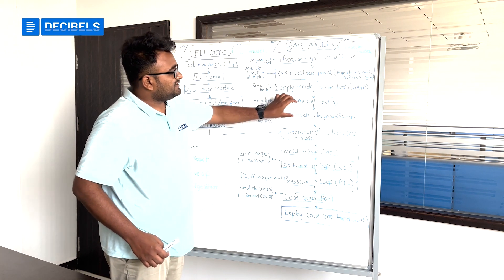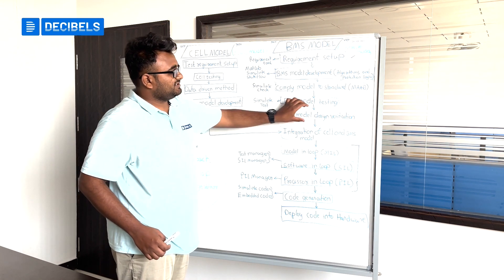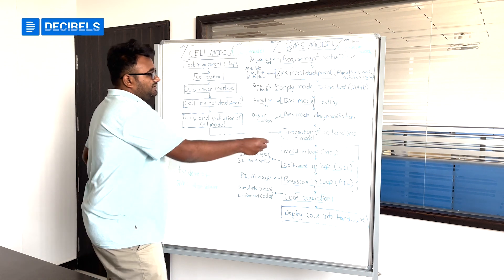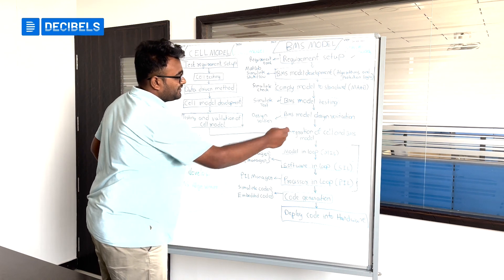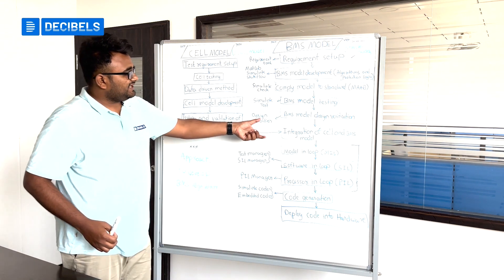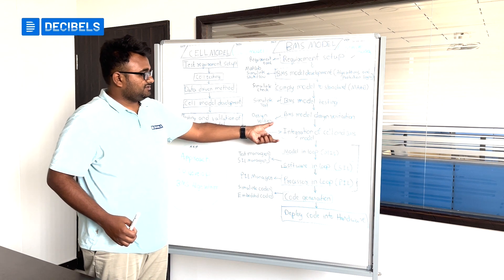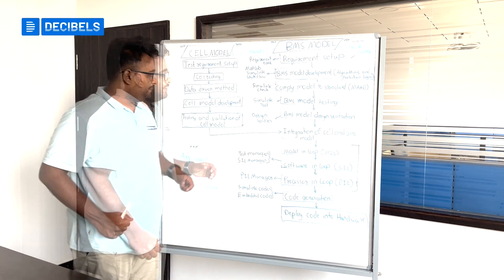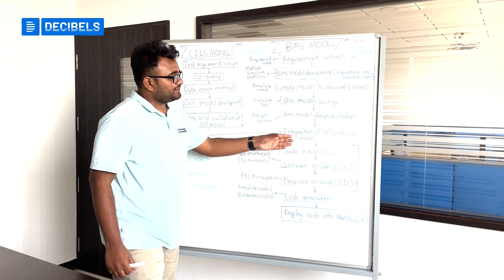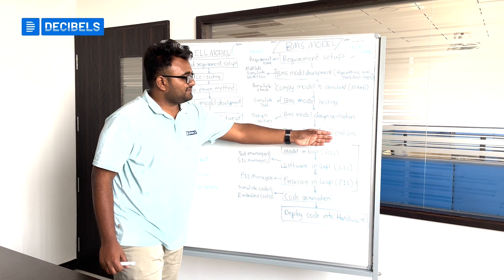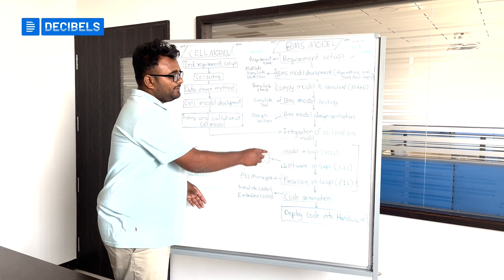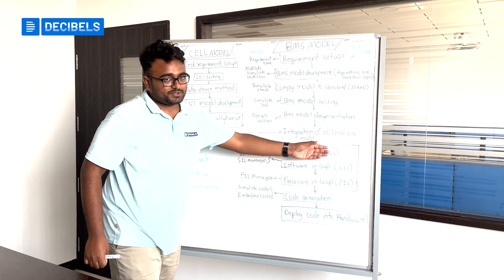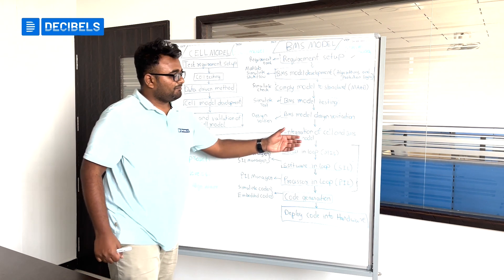Once the model has undergone design verification, you integrate it with the cell model. In this phase, you are going to integrate the cell and the BMS model. Once that integration is done, you run them together in a loop — we call it Model-in-Loop, or MIL simulation.